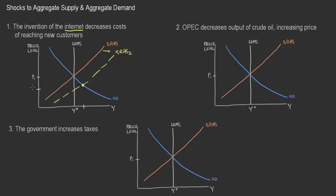We would also see a decrease in the price level, which I'll mark as P2. This is interesting because this is really a productivity improvement — this is what we think of when we think about technology advancements. Technology advancements are a long-run determinant of output; they change the trajectory of output and increase the rate of growth of GDP. So this would also shift the long-run aggregate supply curve to the right — long run 2. This is the technology improvement that changes real output.